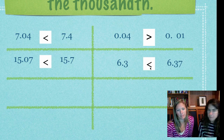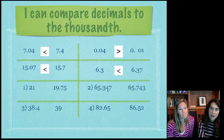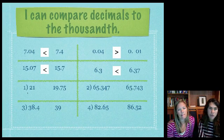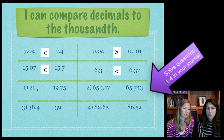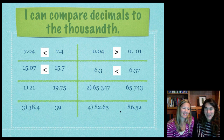Now we have some problems for you and you can number them right in your math journal. You're going to compare these numbers. For one, put your little alligator mouth or greater than less than symbol for two, three, and four.